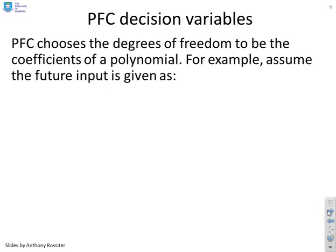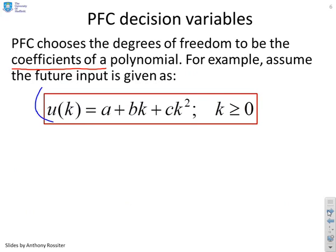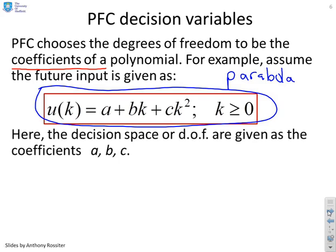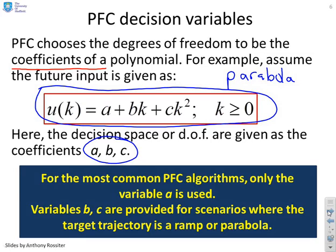PFC chooses the degrees of freedom to be the coefficients of a polynomial. This is the future control that PFC uses: if K is the sample period, then U(K) is given by some constant A, plus some constant times K, plus some constant times K squared — in other words, a parabola. You can choose your future input sequence to be some form of parabola, and the degrees of freedom you can choose are A, B, and C. The most common PFC algorithms actually only use the variable A — just one decision variable. Variables B and C are provided for scenarios where the target trajectory is a ramp or a parabola.